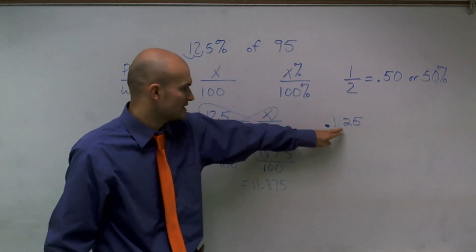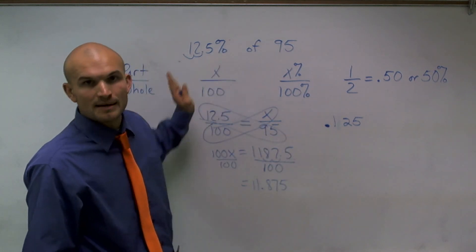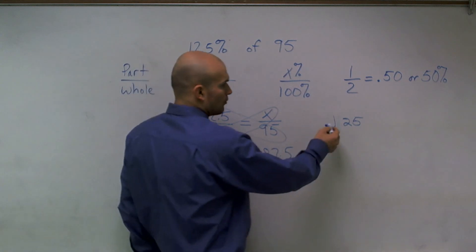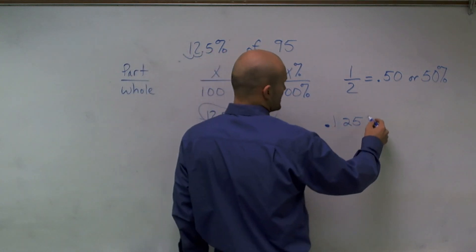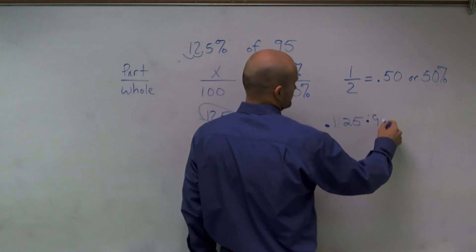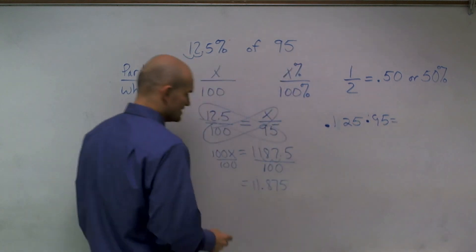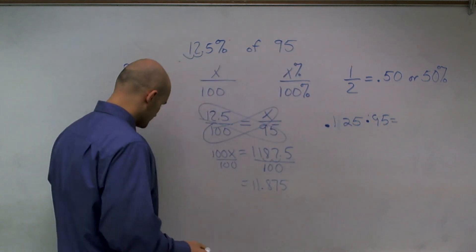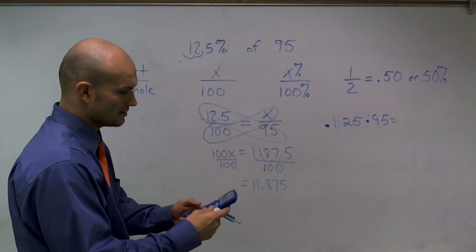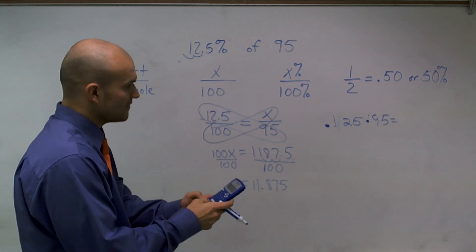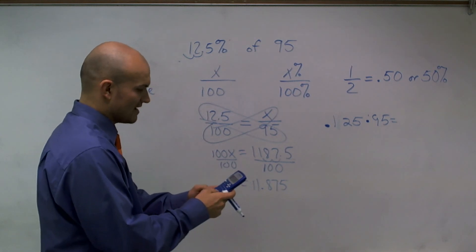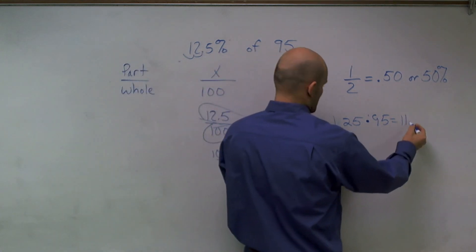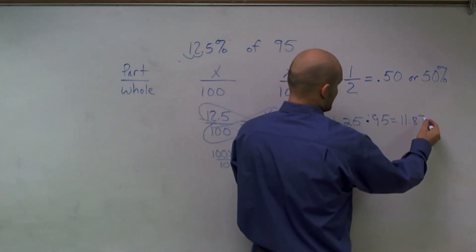So now I converted it to a decimal. Rather than using a fraction, I converted it to a decimal. And now I'm just going to multiply that across. So 0.125 of 95, and what you'll see is it's going to equal, so I'll type in my calculator, 0.125 times 95 equals 11.875.